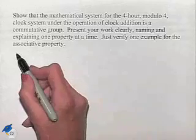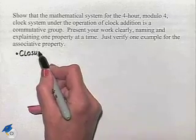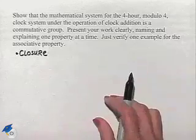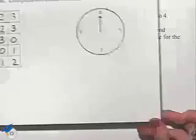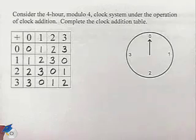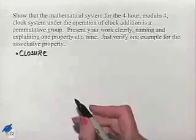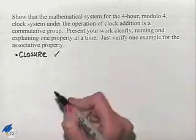Let's start off with the closure property, which is required in order to call this a group. We're going to refer back to the previous problem where we filled out the chart under the operation of clock addition. Notice that all of our results are back in the original set, and because of this, we can state that the closure property holds.